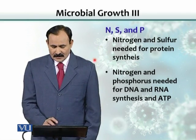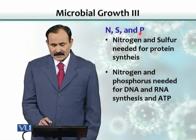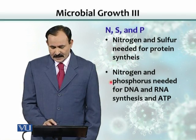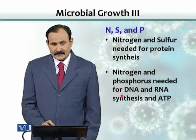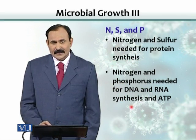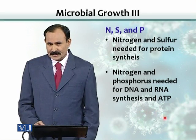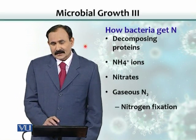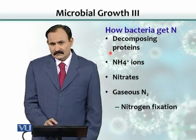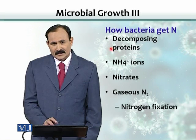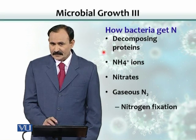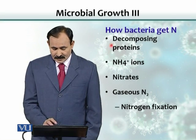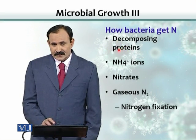Bacteria and microbes also need nitrogen, sulfur, and phosphorus. Nitrogen and sulfur are needed for protein synthesis, whereas nitrogen and phosphorus are used for making DNA and RNA and also in the synthesis of ATP. Nitrogen is obtained by decomposing proteins — like peptones, meat extract, and other protein-based nutrients provided in the lab.